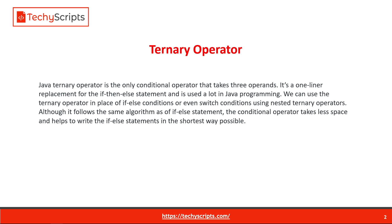In Java, the ternary operator is the only conditional operator that takes three operands. It is a one-liner replacement for an if-then-else statement and is used a lot in Java programming. We can use the ternary operator in place of if-else conditions or even switch conditions. Using nested ternary operators follows the same logic as if-else statements, but the conditional operator takes less space and helps write the if-else statement in the shortest way possible.